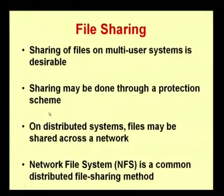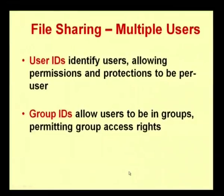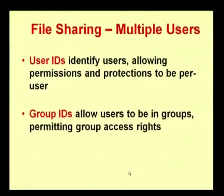File sharing can be done through a protection scheme. On a distributed system, files may be shared across a network by putting them on a server. Network File System (NFS) is a common distributed file sharing method. If there are multiple users, you require a user ID and a group ID. For computer 1, the user is X; for computer 2, the user is Y — each has a computer name, user name, and group name. They can share a file called C. Remote file sharing works on an FTP basis — File Transfer Protocol — where files can be tracked and transferred from the server and copied to the individual user's machine.